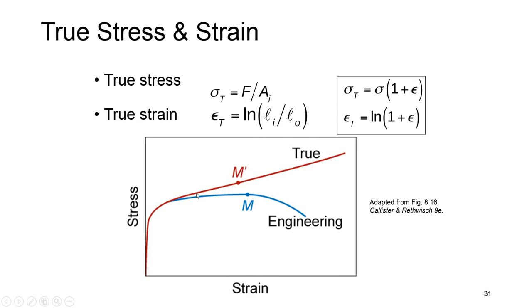If we plot the true stress-strain curve compared to engineering, in general we see an increase in stress as strain increases. We don't see necking because we account for the actual area. After necking starts, the area decreases rapidly as load increases, so the true stress still increases, while in engineering stress this value is decreasing.